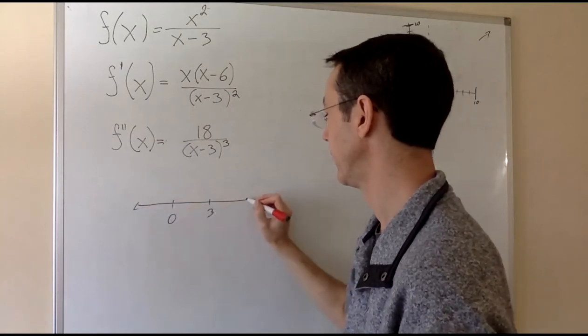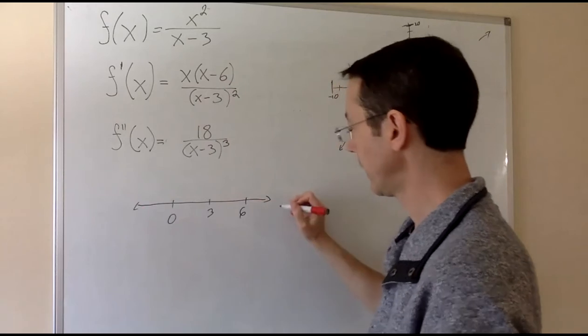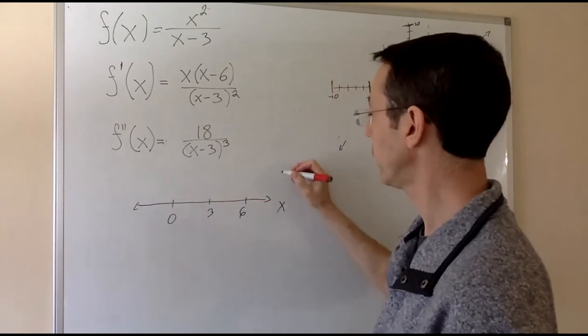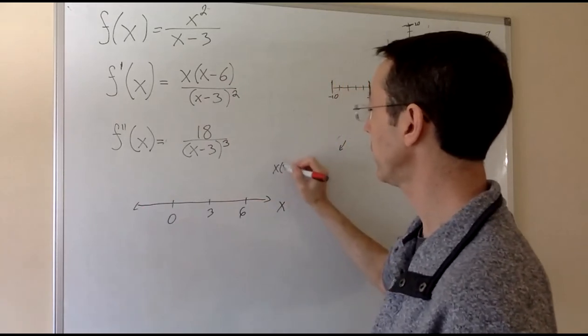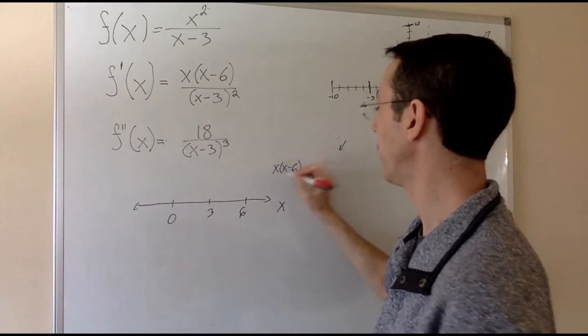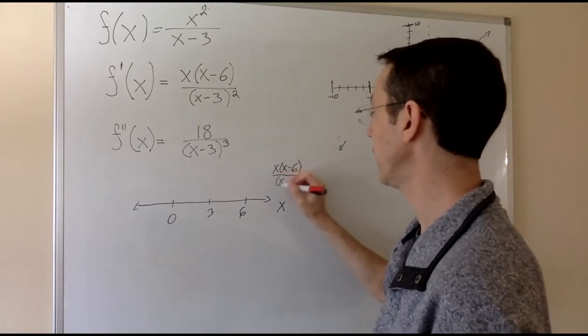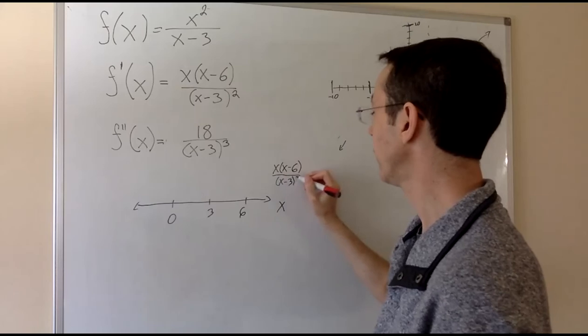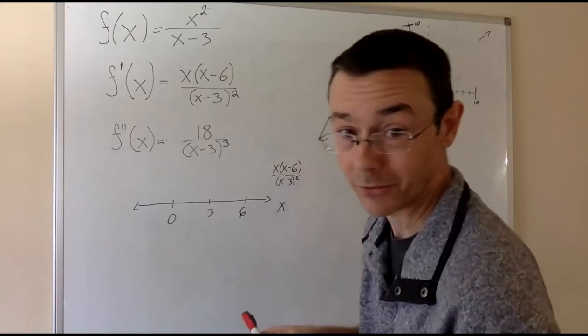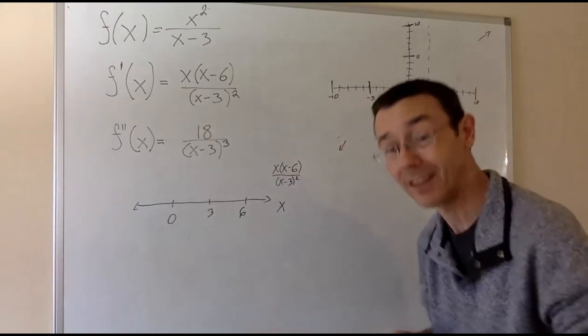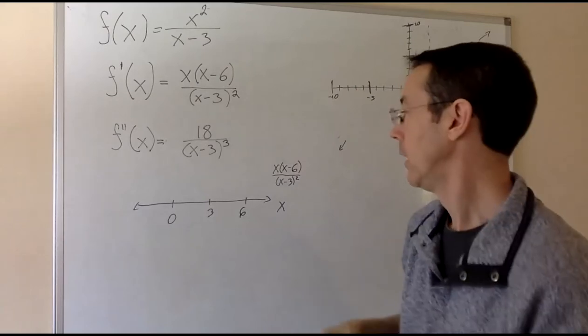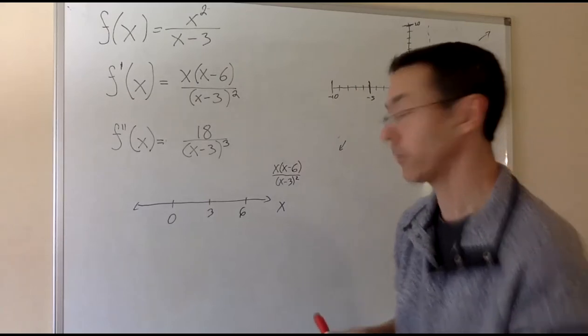Here are the points: 0, 3, and 6. And whenever I do a sign chart, I always explicitly write down the thing whose sign I'm trying to find. There's a lot of functions floating around here. I don't want to get them confused, especially because I'm going to be making more than one sign chart in this problem. So x times x minus 6 over x minus 3.